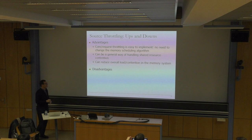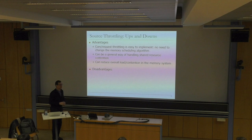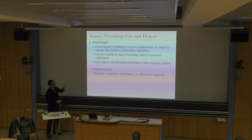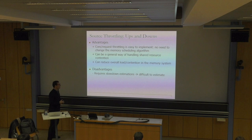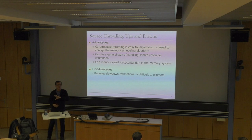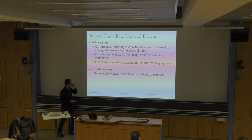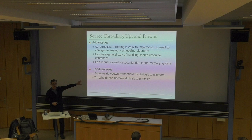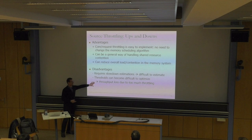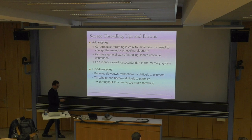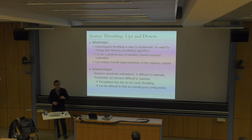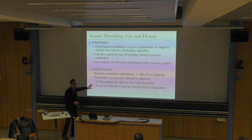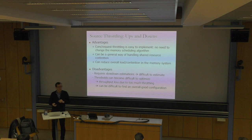Source throttling can essentially reduce the overall load and contention of the system. It can get the system to a point where latencies are lowered by reducing the load. Of course, it has disadvantages too. The mechanism requires some slowdown estimations, which are difficult to estimate. Thresholds can become difficult to optimize, and there are many thresholds in these techniques. If you're not careful, you may lose throughput significantly because you over-throttle some sources. Machine learning techniques could potentially help here, although I haven't seen works using ML in this direction.